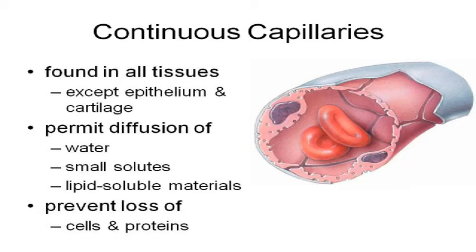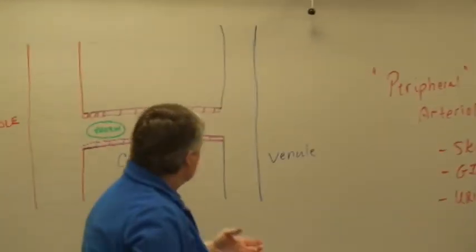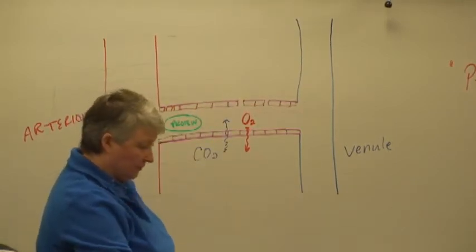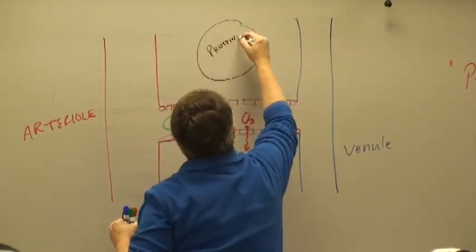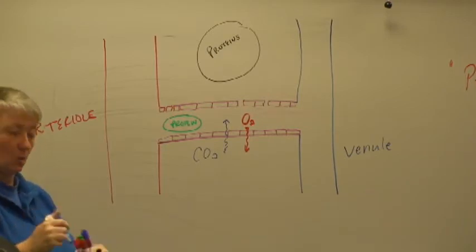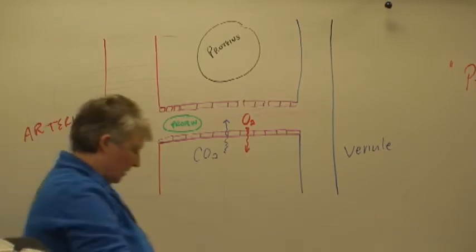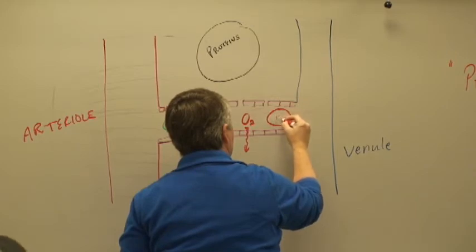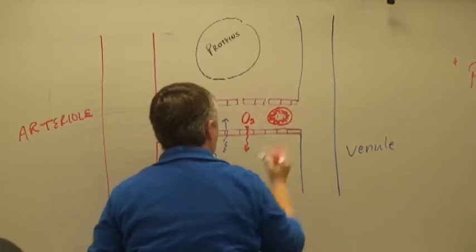The reason that most of your body has continuous capillaries is because cells and proteins are too big. One of the ways that we maintain fluid balance is by having proteins stay inside the bloodstream. You have proteins inside the bloodstream and inside your cells, but in the interstitial fluid — the fluid outside the blood vessels but between the cells — it is very, very low in protein. For continuous capillaries, proteins and blood cells are simply too big to pass through.